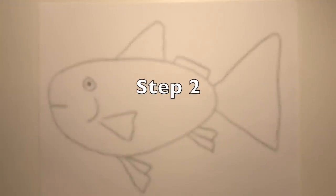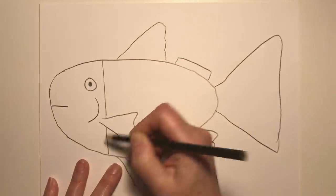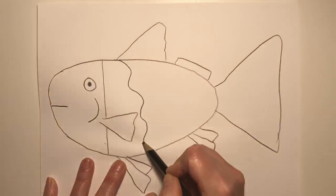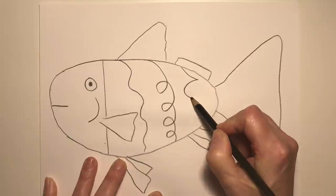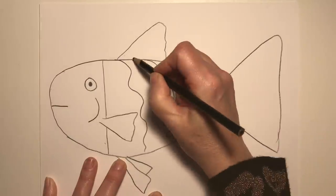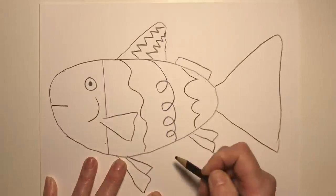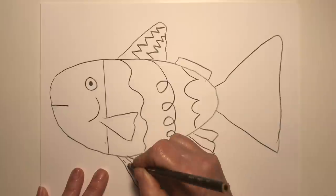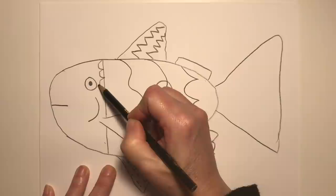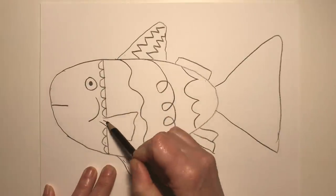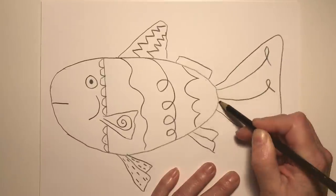In step two, I will add lines to my fish. I can add a straight line. I can add a curvy line, a curly line, a wavy line, a zigzag line, a broken line, a bumpy line, a swirly line, curved lines, lines with loops.